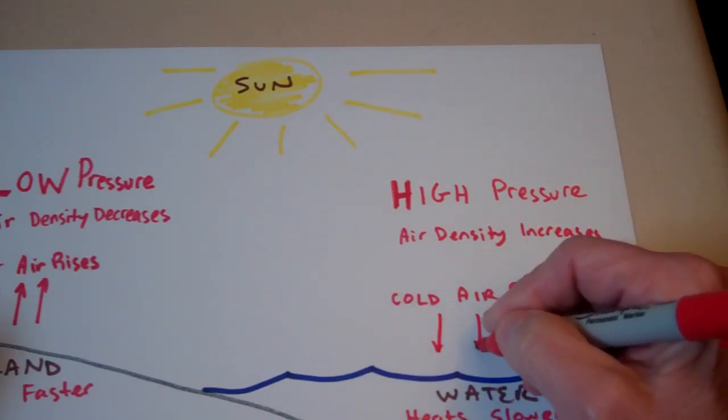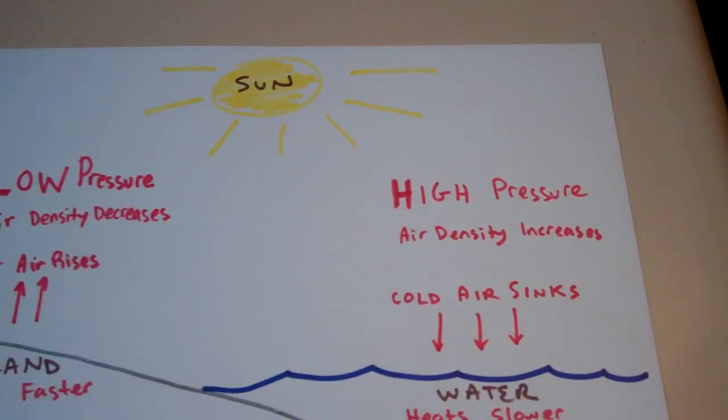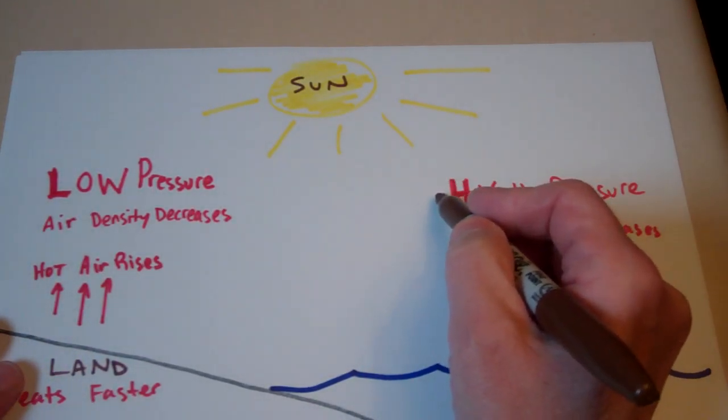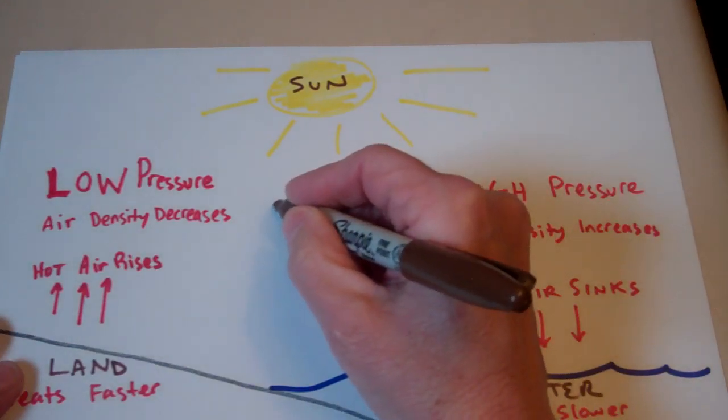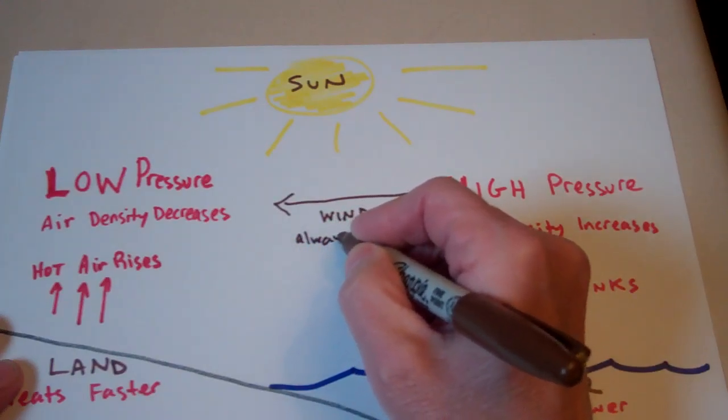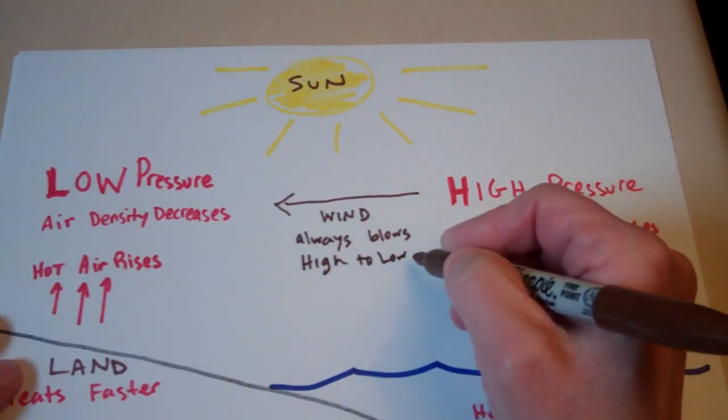So my little arrows to show that the air is sinking. Now, what happens with the wind now? Well, wind always blows from where there's a higher pressure to a lower pressure. Wind always blows high to low, just like water always moves high to low, if you remember that from biology. So the wind is always moving from high to low. So this is going to represent our wind always blows from high to low.